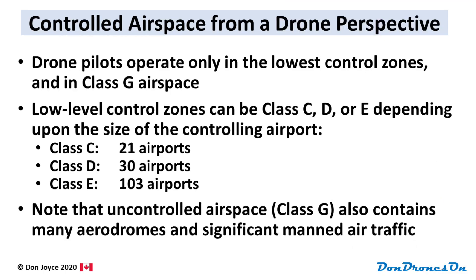This can get very complicated, but fortunately we drone pilots operate only in the lowest control zones, and in fact only in the lowest parts of these zones. And of course we also operate in class G airspace. The low-level control zones we normally could be flying in are class C, D, or E, depending upon the size of the controlling airport.